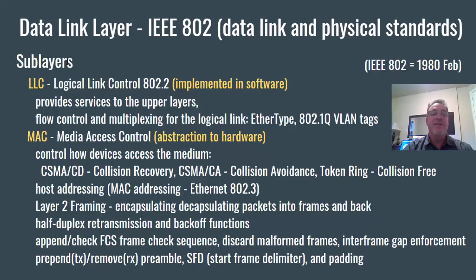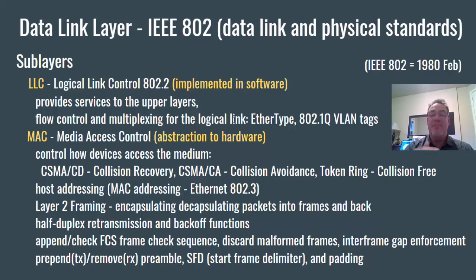There are two sub-layers in the data link layer. The LLC — the logical link control sub-layer, 802.2 — is implemented in software, not hardware. It's the upper of the two sub-layers in the data link layer. It provides services to the upper layers, layer three. It provides flow control and multiplexing for the logical link, not for the physical link, but the logical link above it.